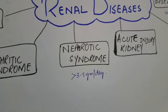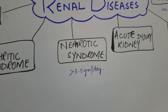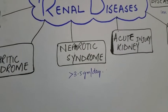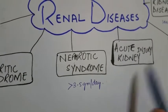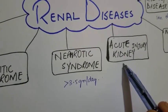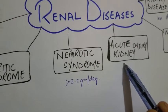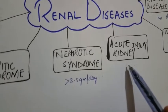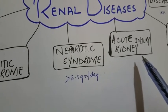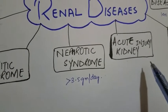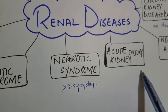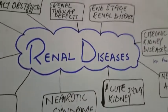Acute kidney injury is when there is a rapid decline in GFR over hours to days, along with metabolic disorders, resulting in manifestations of oliguria and anuria. It results from glomerular, interstitial, vascular, or acute tubular injury.